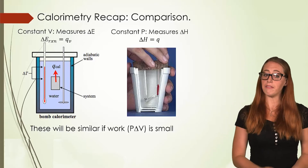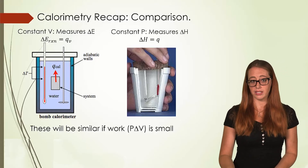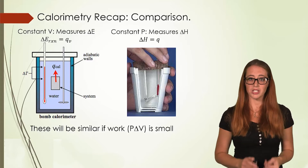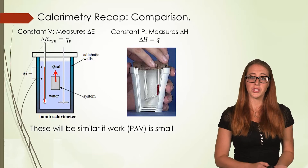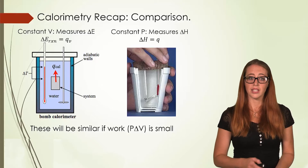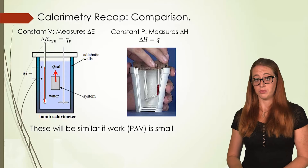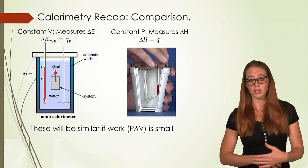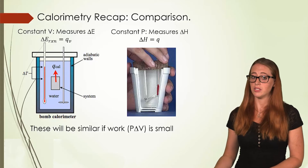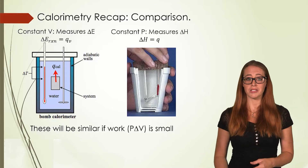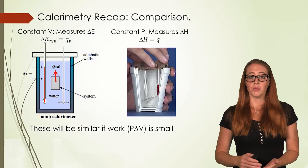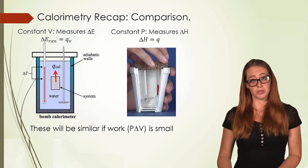When we do constant volume calorimetry, we measure delta E — if you want the larger explanation for why, go check out that video. For constant pressure calorimetry, we're measuring delta H — again, go review that video if you'd like the full explanation. We measure delta H because delta H is equal to Q.